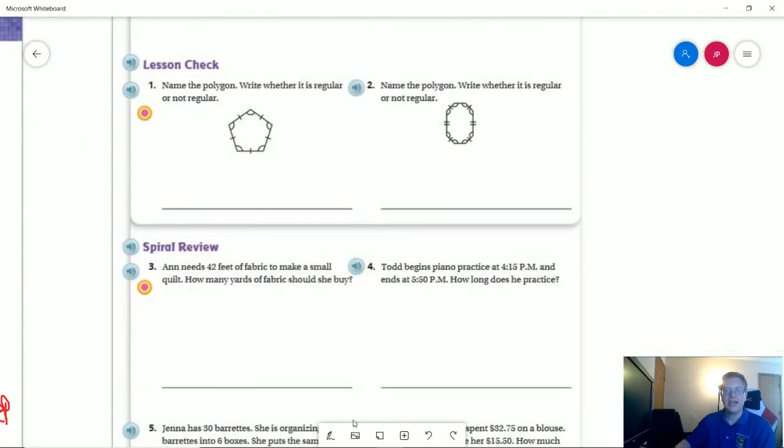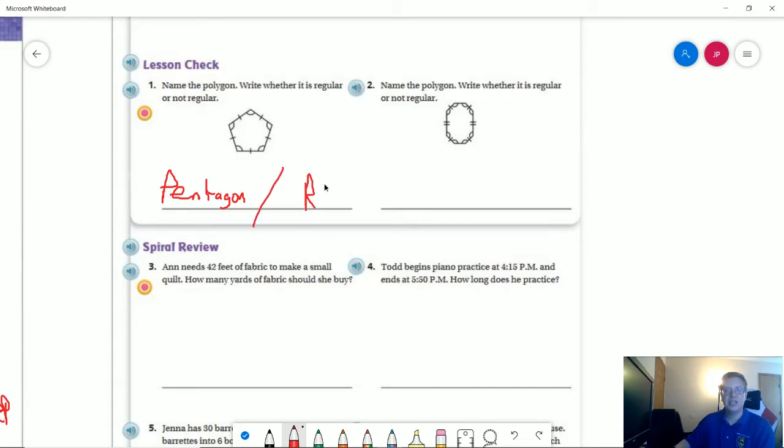Number one on the back, I have a pentagon, and I have all of the sides the same length and all the angles the same length, so that one would be a regular polygon.